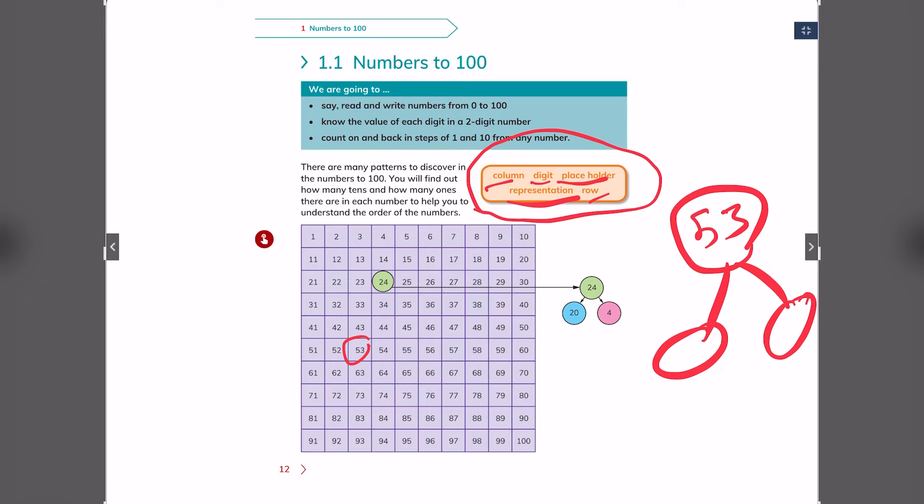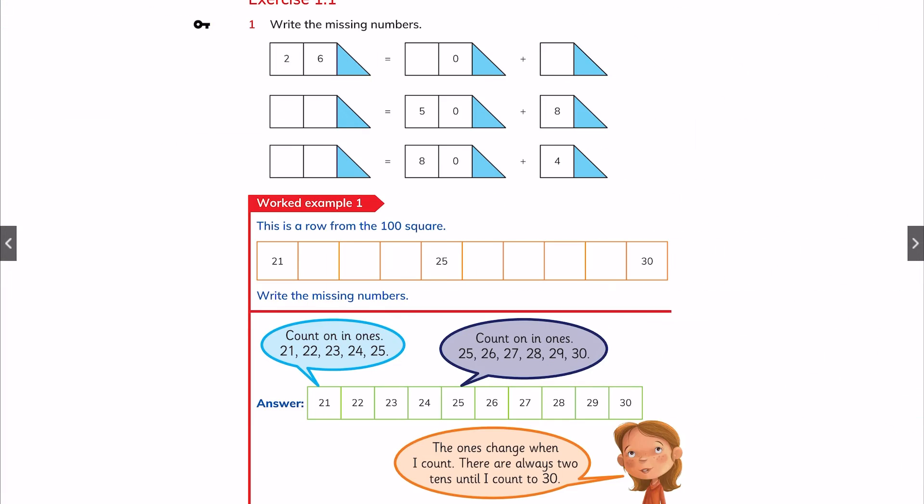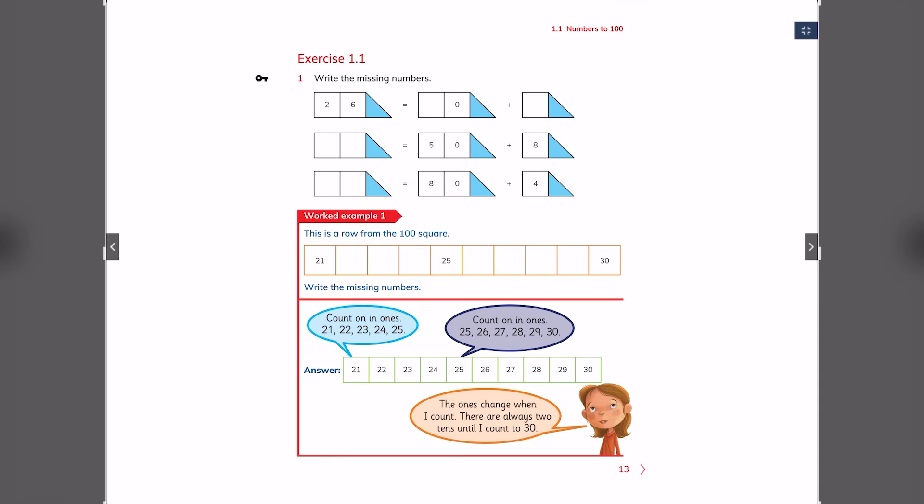After you finish that, we'll go to the next page. And if you are struggling with it, the first digit is 3 and the second one is 50. Good job. Now let's go to the other page. On page 13, exercise 1.1. Question 1, write the missing number. So as you can see, we have number 26. We separate it to its ones and tens. The first one is the number 20 and the second one is number 6. So 20 plus 6 equals to 26.